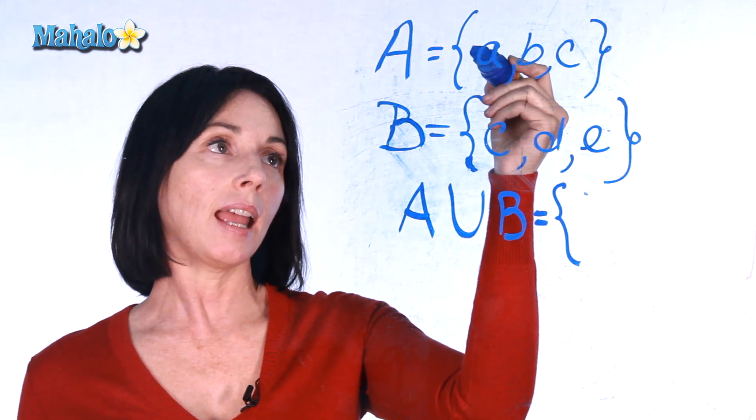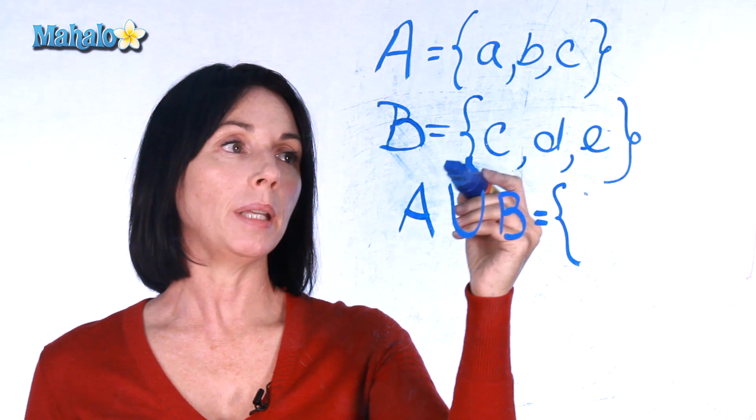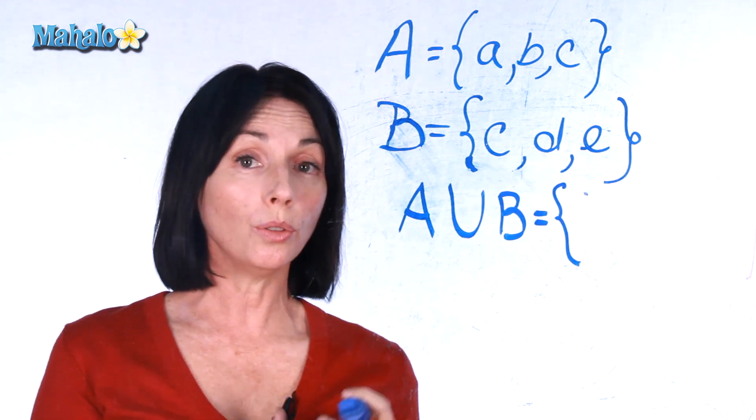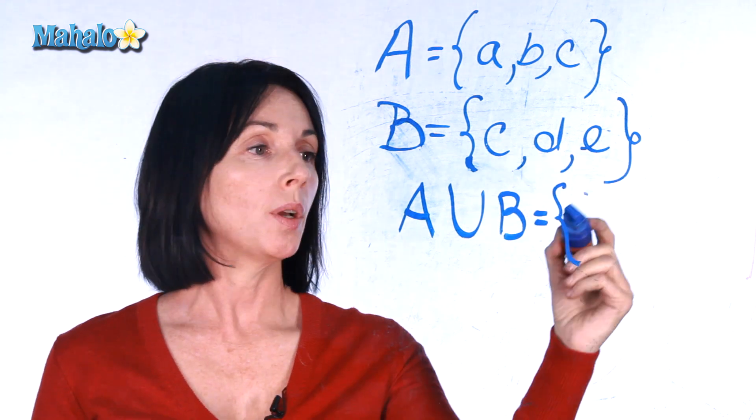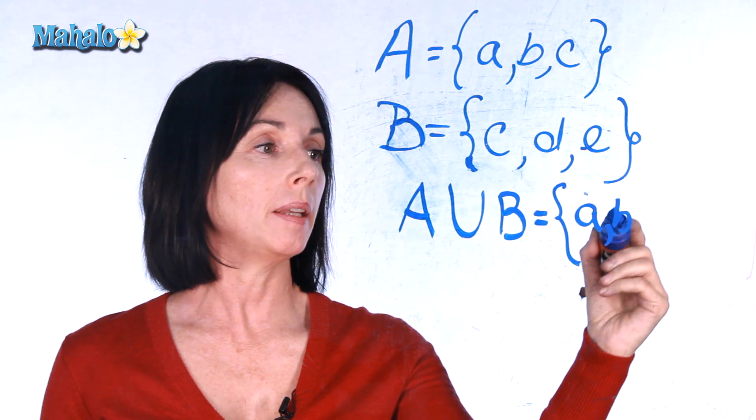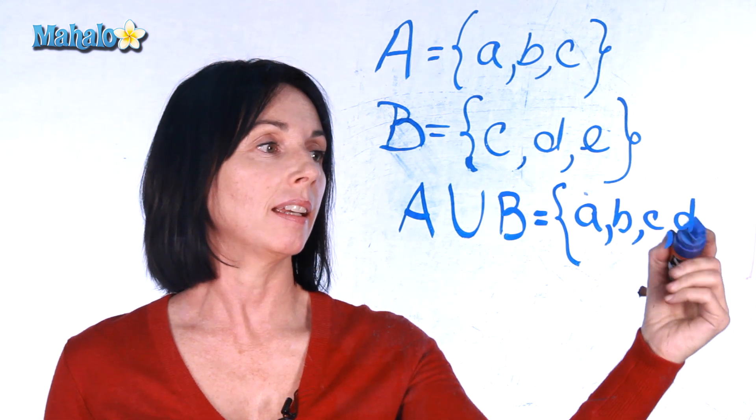So set A has A, B, and C. Set B has C, D, and E. So the union of those two, when we combine them, will have A, B, C, D, and E.